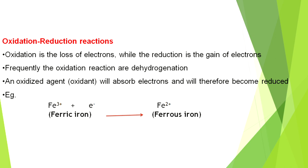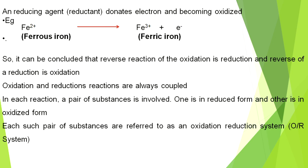Next, oxidation-reduction reactions. Oxidation means the loss of electrons; reduction means the gain of electrons. Frequently, oxidation reactions involve dehydrogenation. In oxidation reactions, the oxidizing agent — that means oxygen — absorbs electrons and becomes reduced. Example: ferric ion is converted to ferrous ion. In reduction reactions, the reducing agent — the reductant — donates electrons and becomes oxidized, meaning ferrous ion is converted to ferric ion.